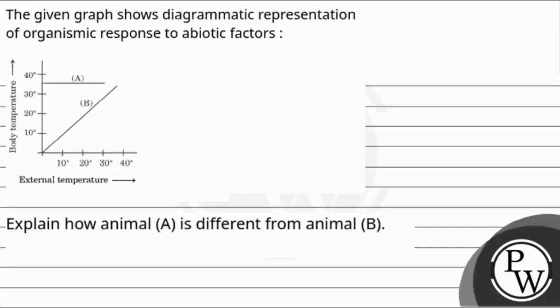Hello, let's read the question. The question says the given graph shows diagrammatic representation of organisms response to abiotic factors. Explain how animal A is different from animal B.